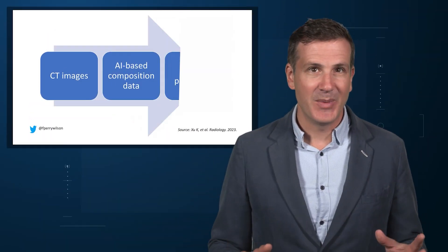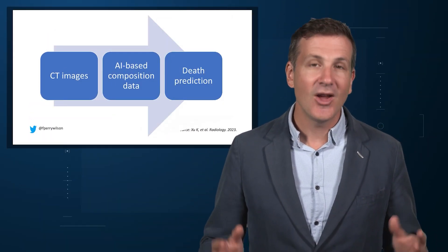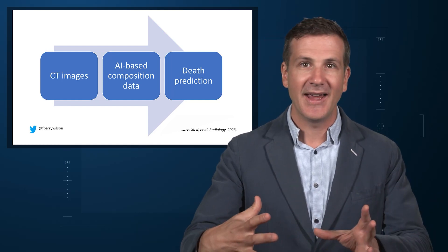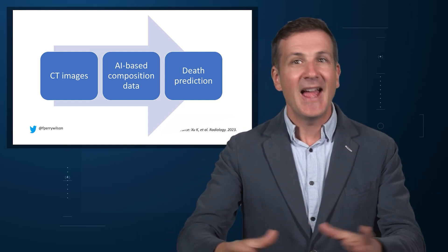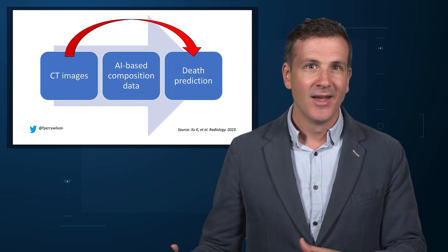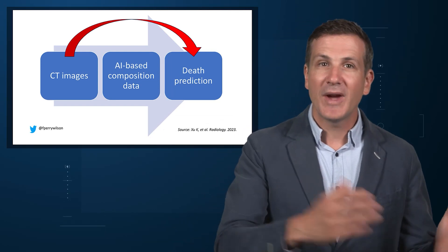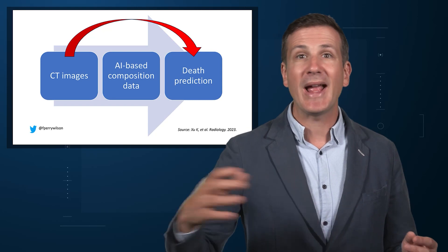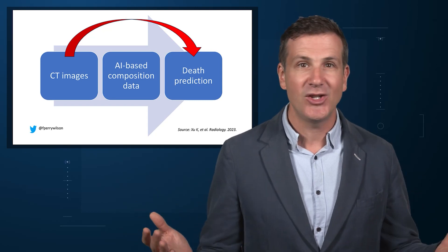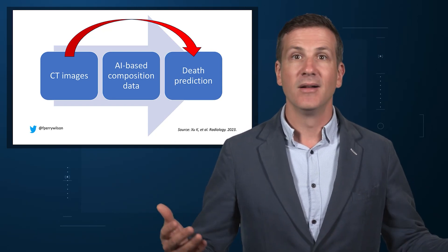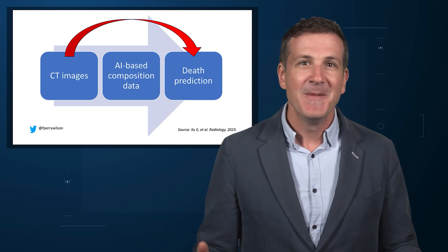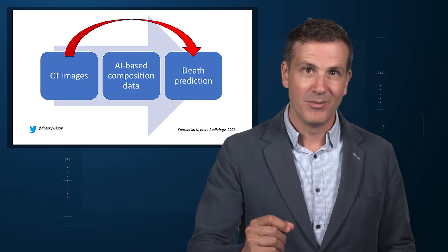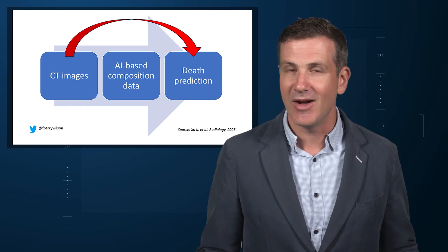The concordance index tells us the probability — given two individuals — how often we can identify the person who has the outcome of interest sooner, if at all. The worst possible score is 0.5 and the best is 1. A model without the AI data gives a concordance index for all-cause mortality of 0.71 or 0.72, depending on sex. Adding in the body composition data bumps that up only by a percent or so. This honestly feels a bit like a missed opportunity. Why not skip the middleman? Train a model using the imaging data to predict death directly, using whatever signal the AI chooses — body composition, lung size, rib thickness, whatever. I'd be very curious to see how that model might improve our ability to predict these outcomes.